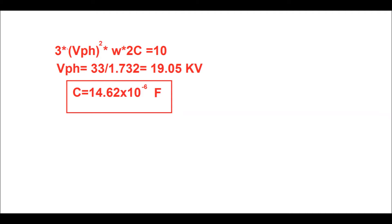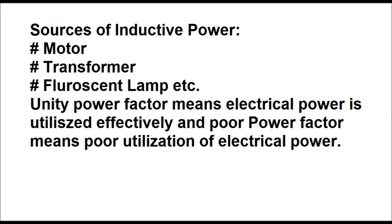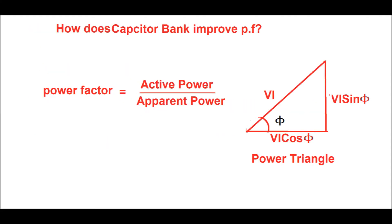What is the use of a capacitor bank in a substation? In a substation there are many sources of inductive or lagging reactive power, such as motors, transformers, and fluorescent lamps. Unity power factor means electrical power is utilized effectively, while a poor power factor means poor utilization of electrical power. The capacitor bank improves the power factor by nullifying the inductive reactive power. The power factor is the ratio of active power to apparent power, as shown in the power triangle: VI·cosφ is active power, VI·sinφ is reactive power, and VI is apparent power.